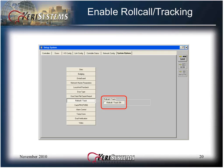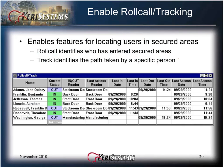Enable roll call tracking by clicking the Roll Call Track On checkbox. Roll call tracking enables features for locating users in secured areas. Roll call identifies who has entered secure areas, and track identifies the path taken by a specific person. Roll call track is described in its own training module.